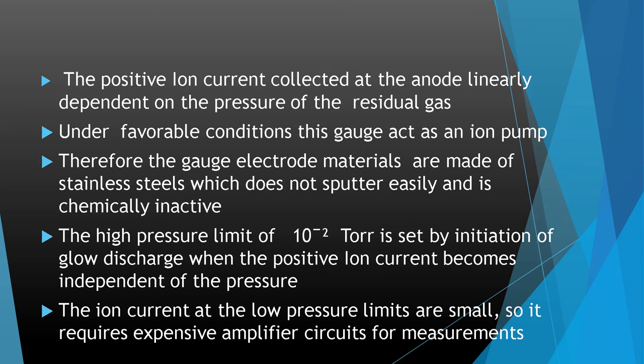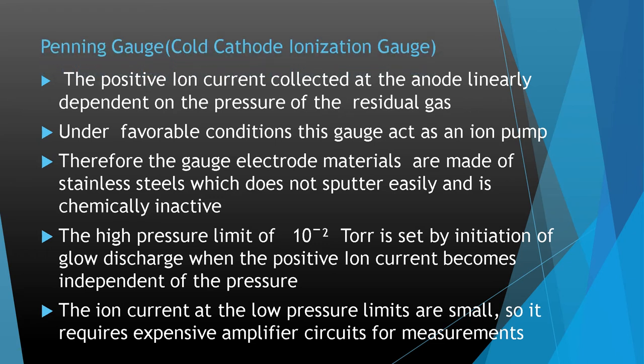Under favorable conditions, this gauge can act as an ion pump. Therefore, the gauge electrode materials are made of stainless steel, which does not sputter easily and is comparatively chemically inactive. The high pressure limit of 10⁻² Torr is set by the initiation of glow discharge, when the positive ion current becomes independent of pressure. At the low pressure limit, the ion currents are small, so expensive amplifier circuits are required for measurement.